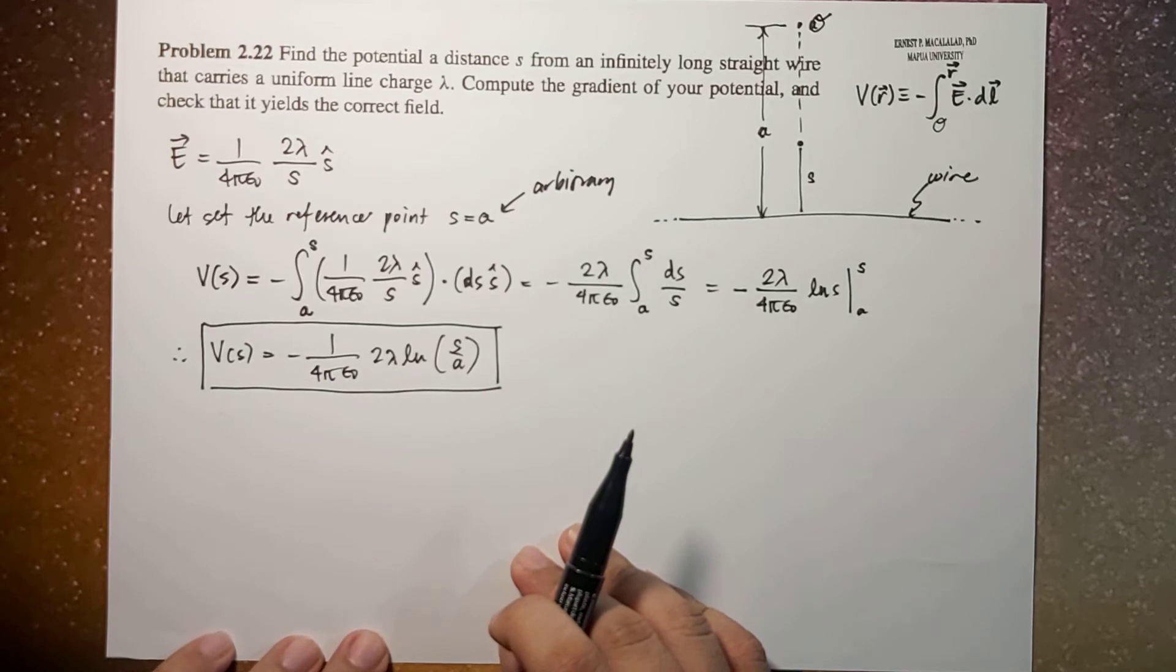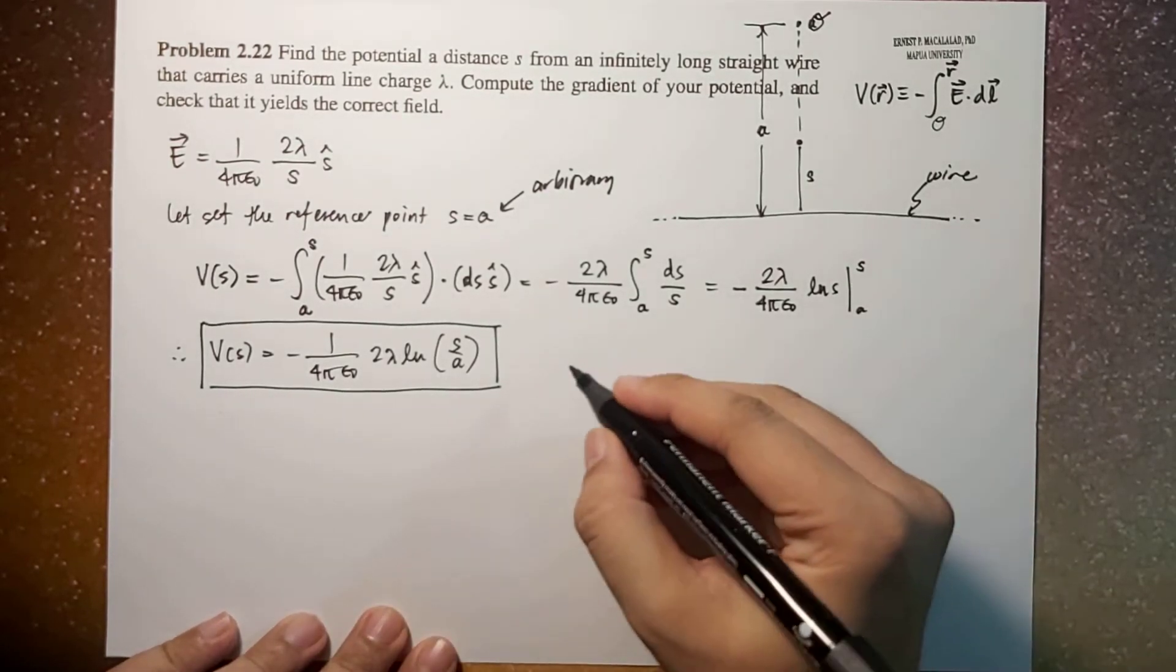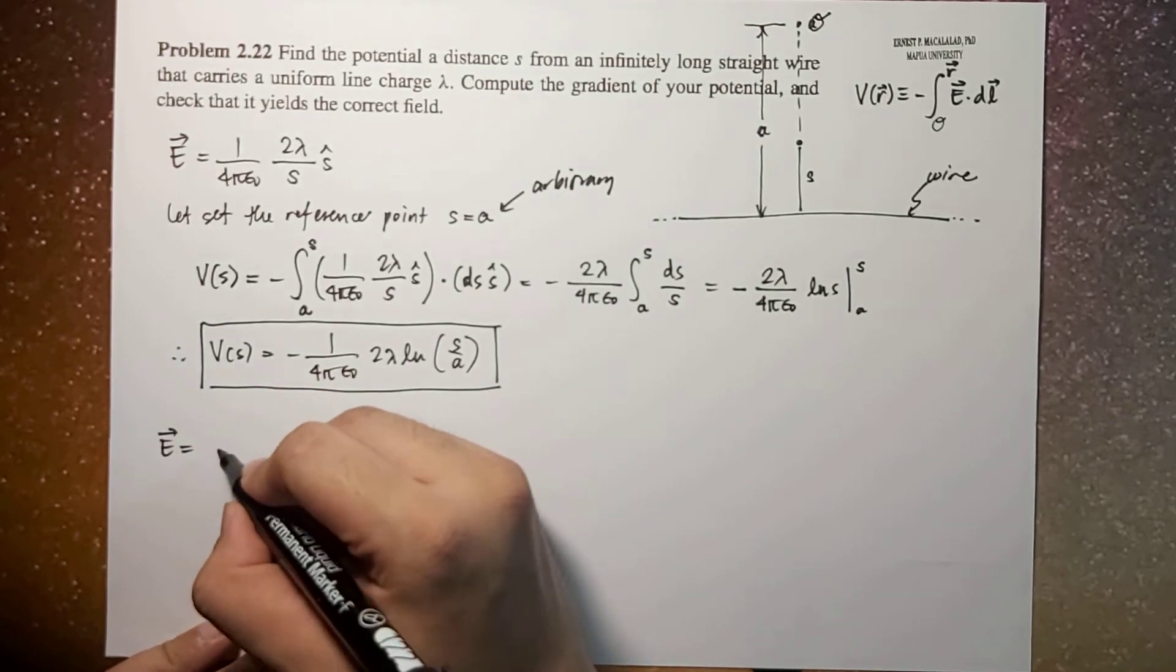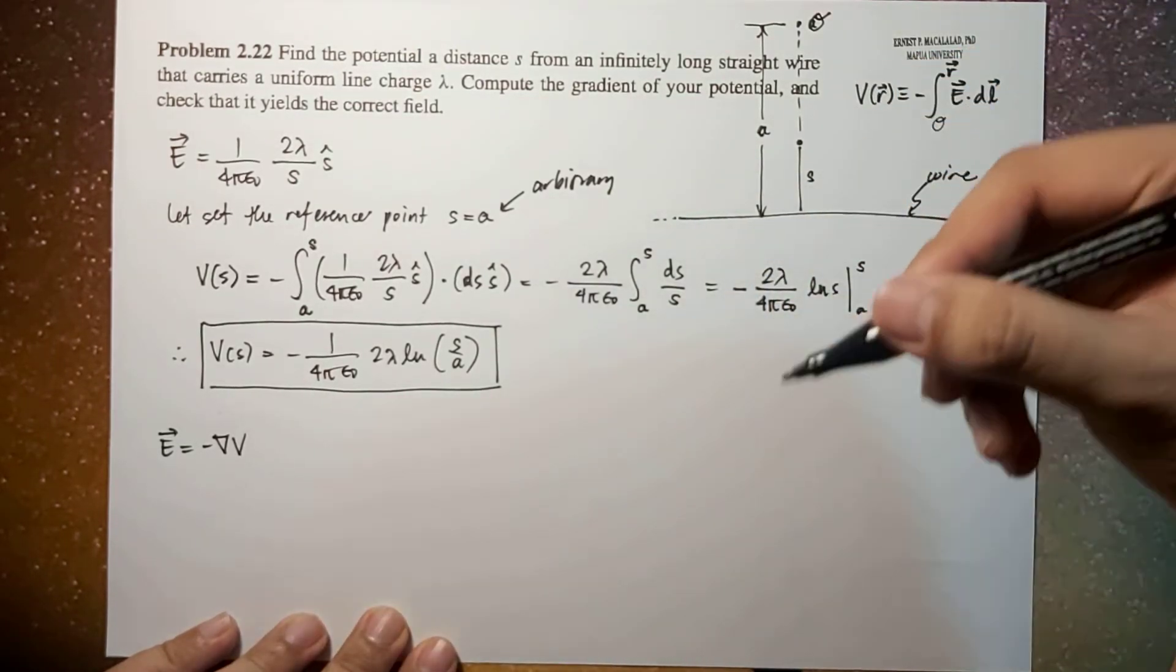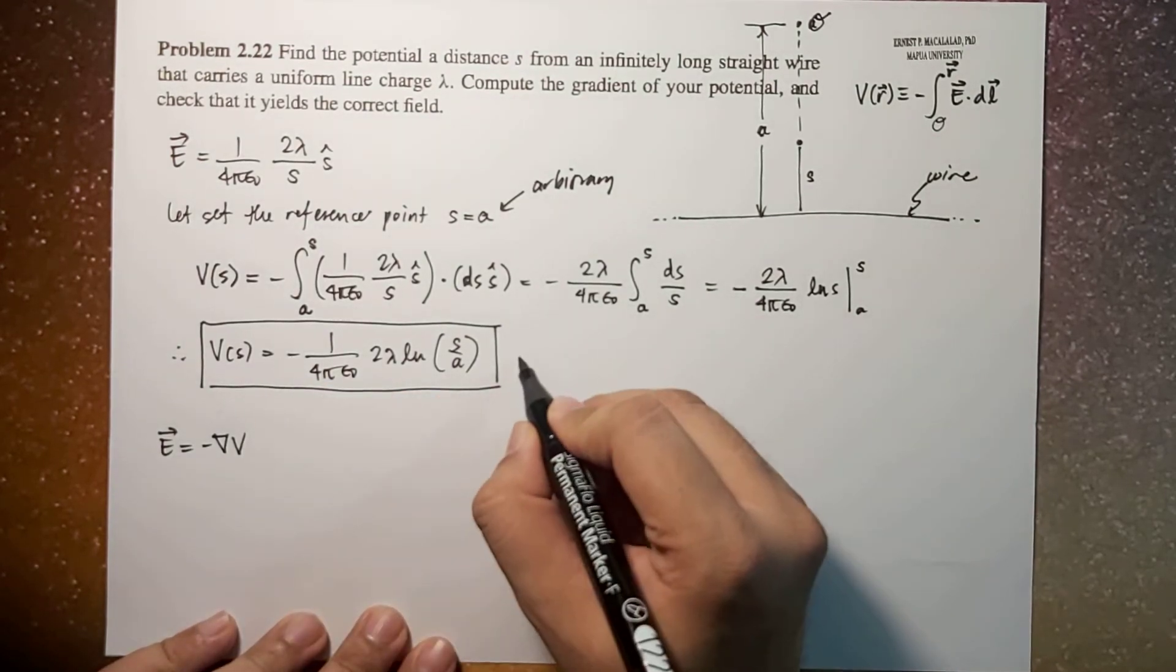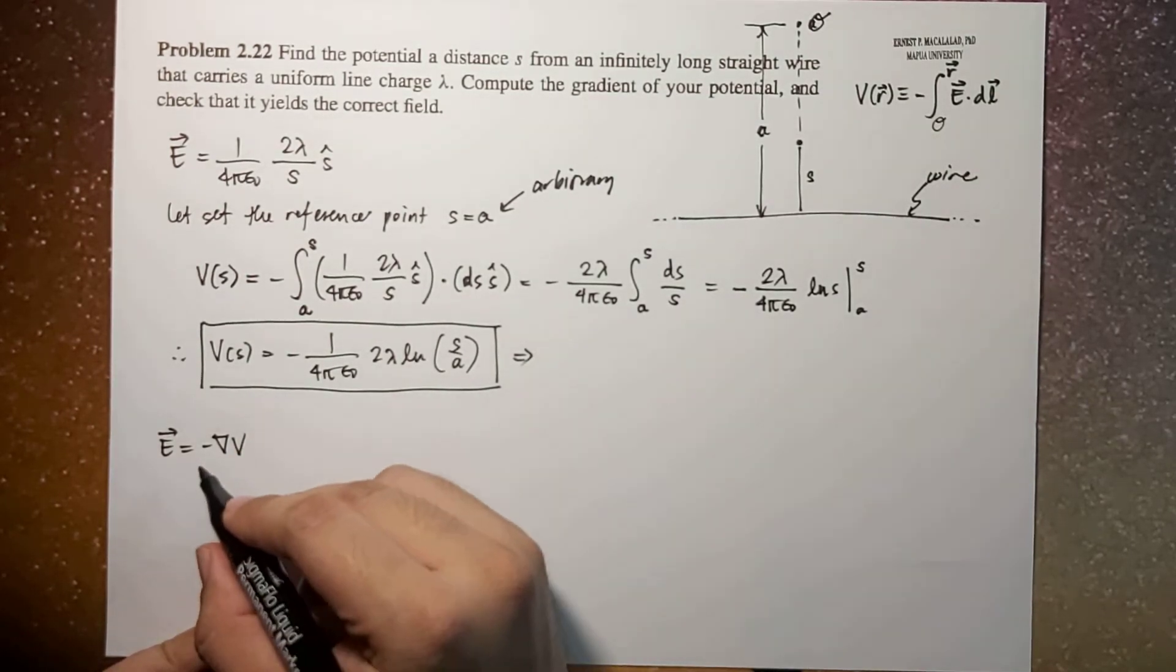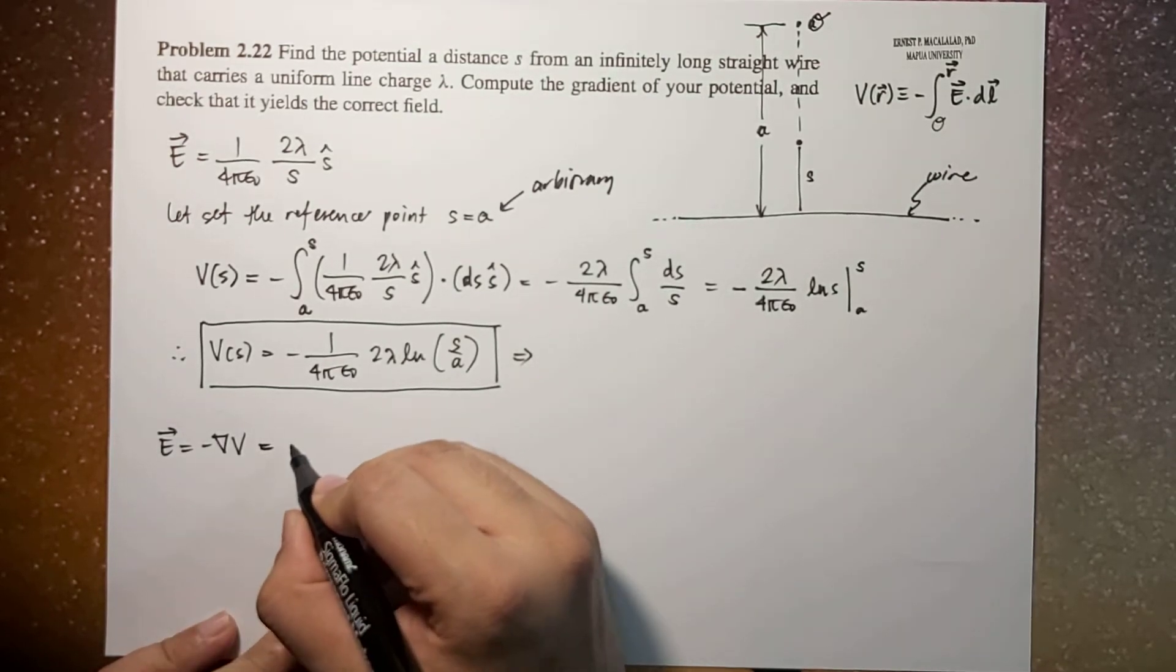Now let's check if this will definitely yield the correct field. Remember that electric field is equal to the negative gradient of your potential. So here we are actually using cylindrical coordinate system, and you will notice that the potential is only a function of s.